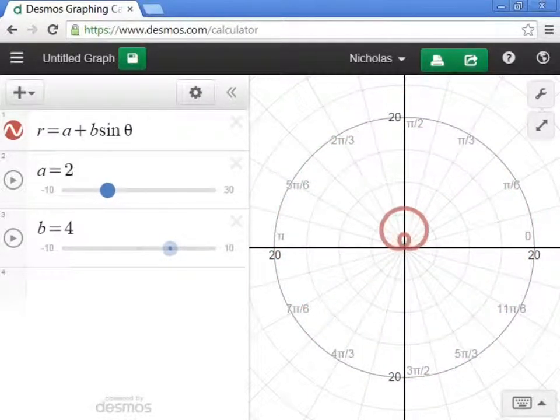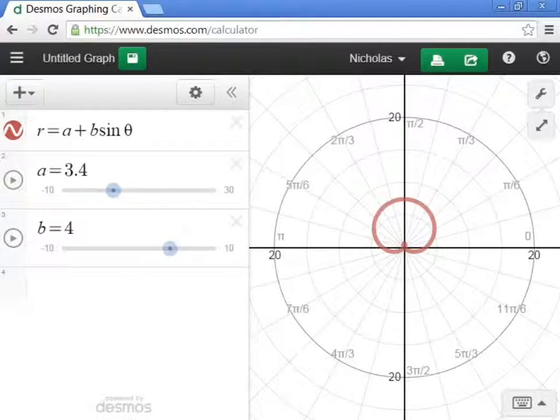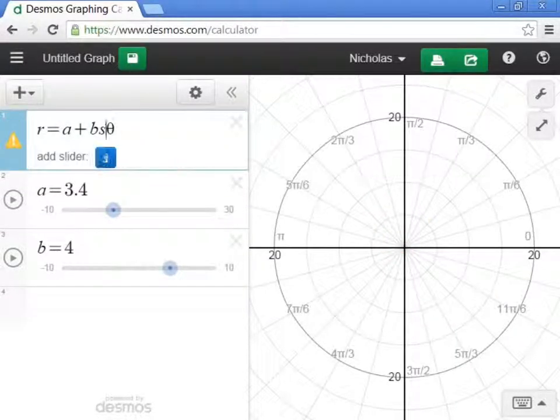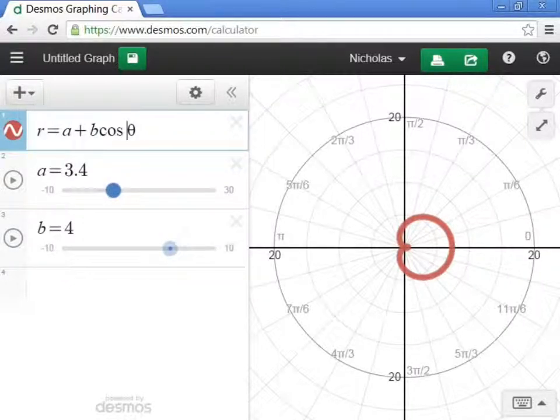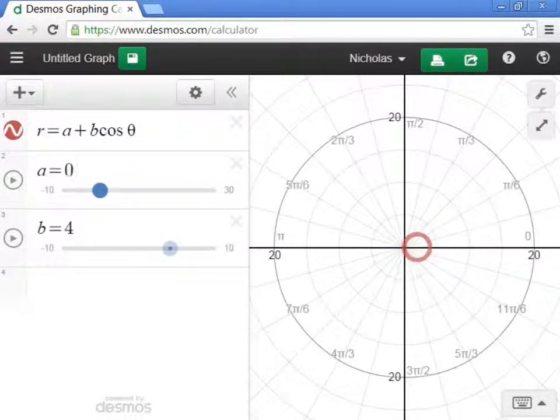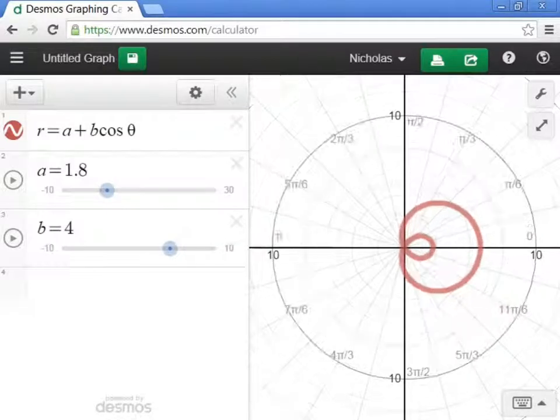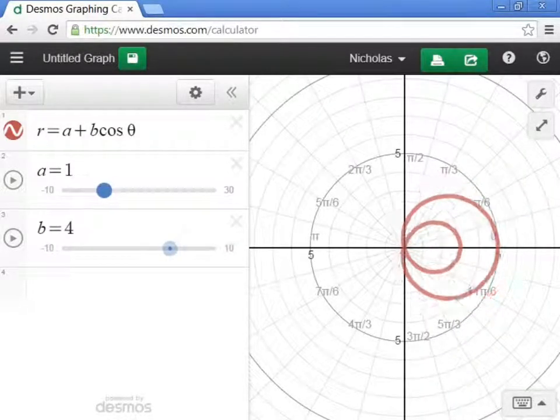So anyways, this is a limicon, and the ratio between the B and the A determines what your limicon is going to look like. One last thing. Notice that the limicon is going around the y-axis right here. If I change this to cosine, now it's going around the x-axis. Everything still behaves the same, except now it's on the x-axis.